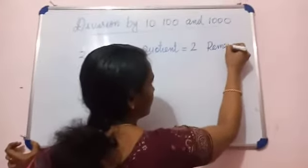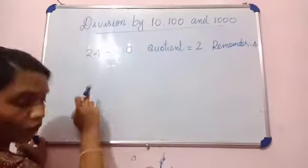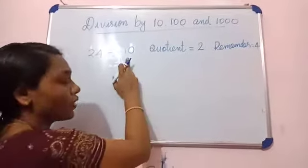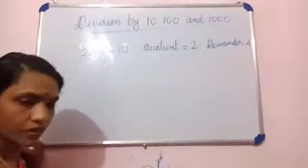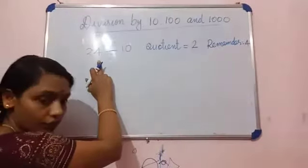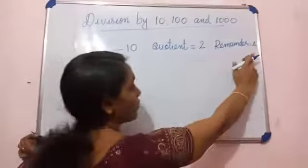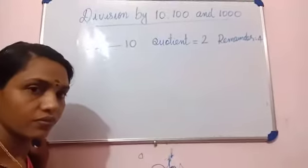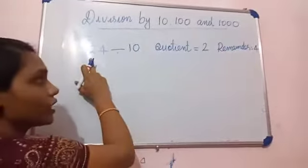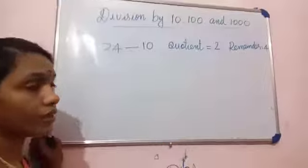2 tens are 20, then 4 is the remainder. Here the last digit of the dividend gives the remainder — last digit of 24 is 4, so 4 is the remainder. The other digit, 2, gives the quotient. So 2 is the quotient and 4 is the remainder when dividing by 10.